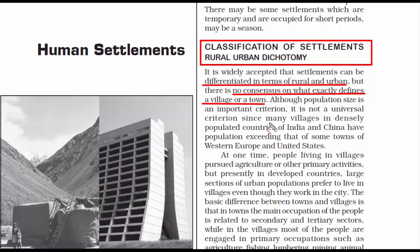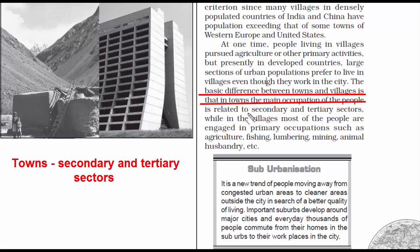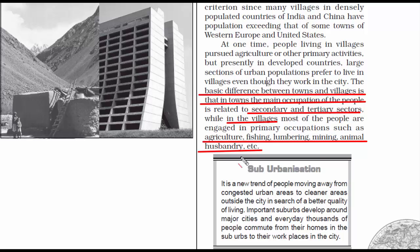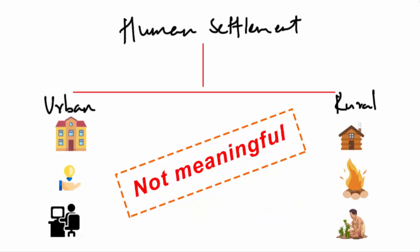Population size cannot be taken as a method to classify a place as a village or town either, because many villages in India and China have more population than some towns in Western Europe and the United States. The only meaningful difference is that in towns, the main occupation is related to secondary and tertiary sectors — working in factories or multinational corporations — while in villages, most people are engaged in primary occupations such as agriculture, fishing, lumbering, mining, and animal husbandry. In developed countries, large sections of urban population actually prefer to live in villages even though they work in the city.